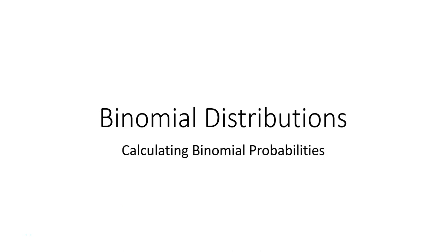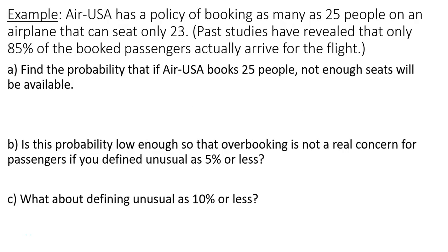This is a video about calculating binomial probabilities. AirUSA has a policy of booking as many as 25 people on an airplane that can seat only 23. Past studies have revealed that only 85% of the booked passengers actually arrive for the flight.